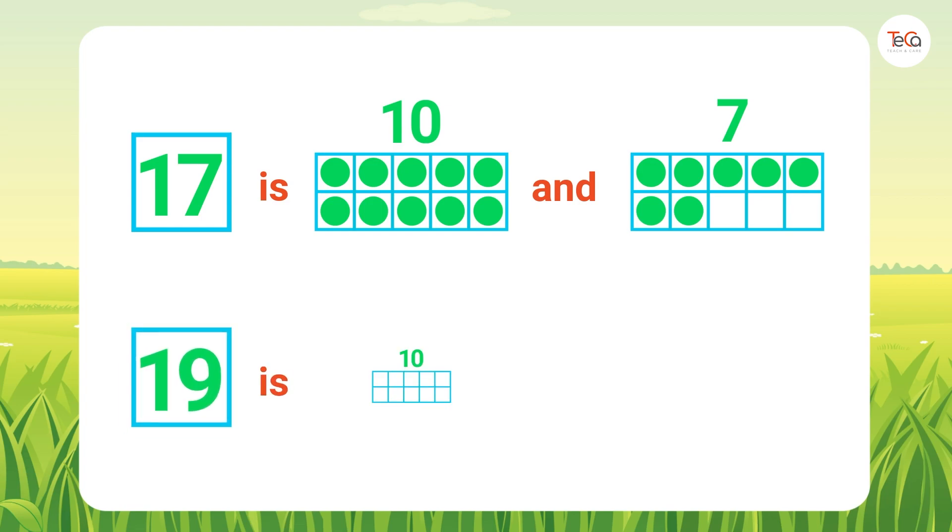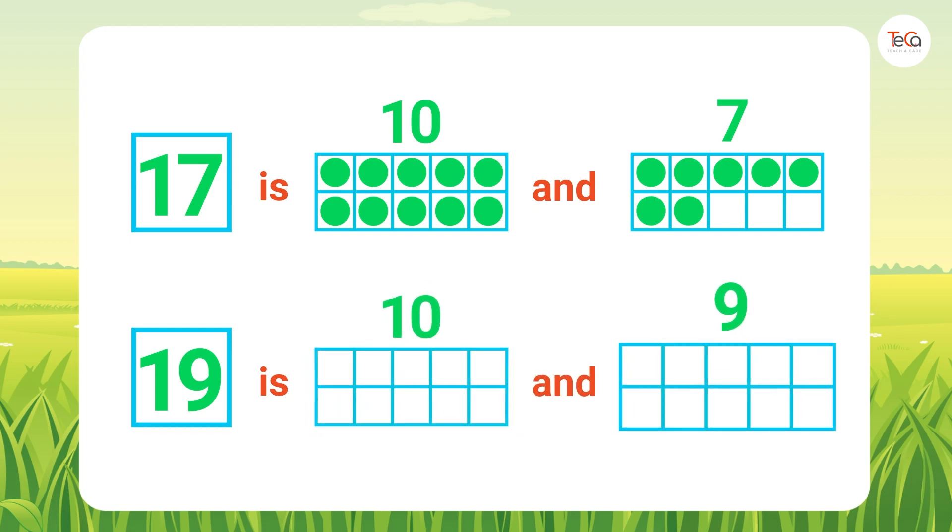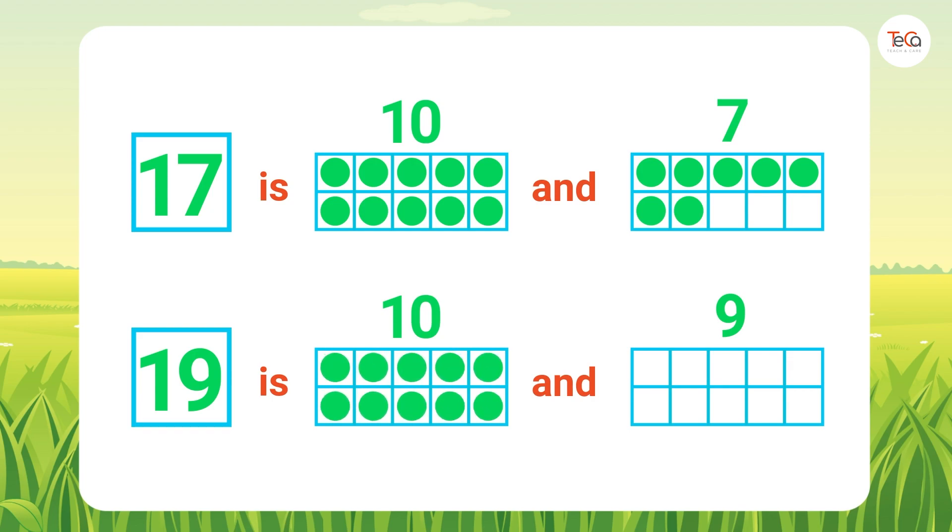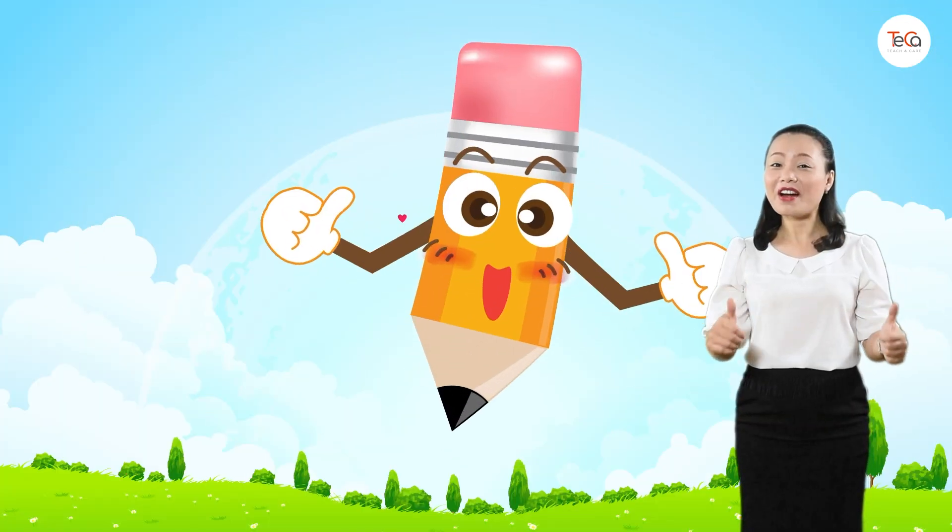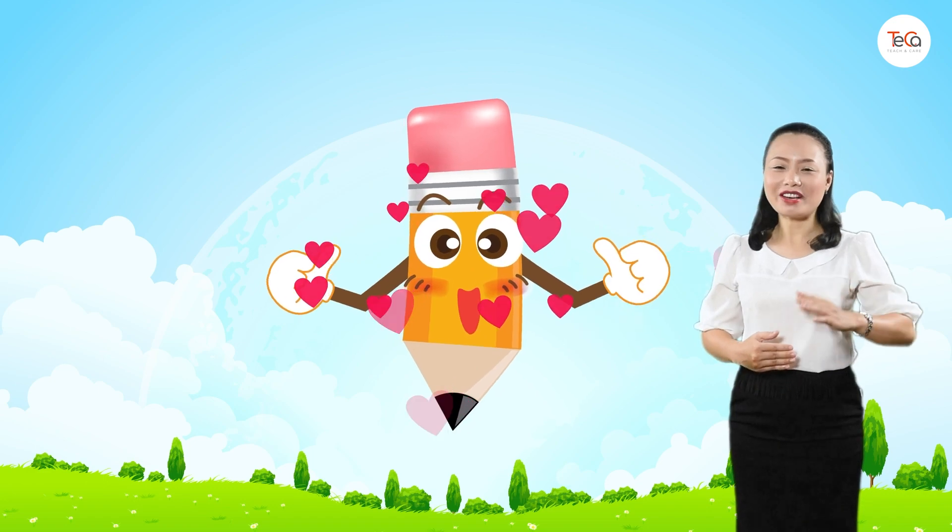The last one, 19 is 10 and 9. You can draw 10 dots here and 9 dots here to show number 9. You're finished.